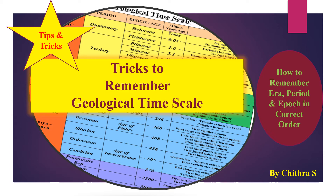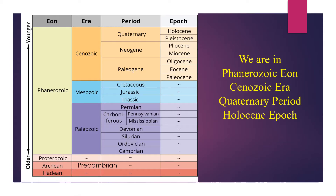That means era, period and epoch in correct order. This video is not helpful for learning the events of geological time. This is only for memorizing geological time scale names in correct order. This is the chart of geological time scale, given from older to younger — that means older to recent.